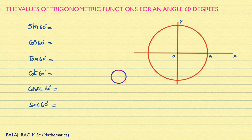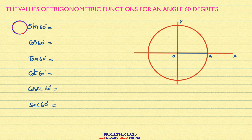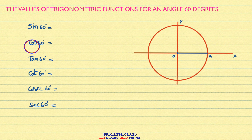Hi friends, I am Balaji Rao. Welcome to BRMAX class. In the previous class, we learned the proofs of the values of trigonometric functions for an angle of 45 degrees. In this class, we will learn why the sin 60 degrees value is root 3 by 2, and why the cos 60 degrees value is 1 by 2.